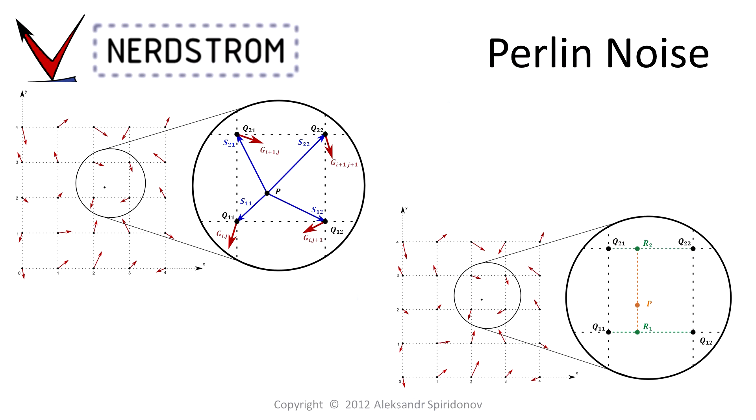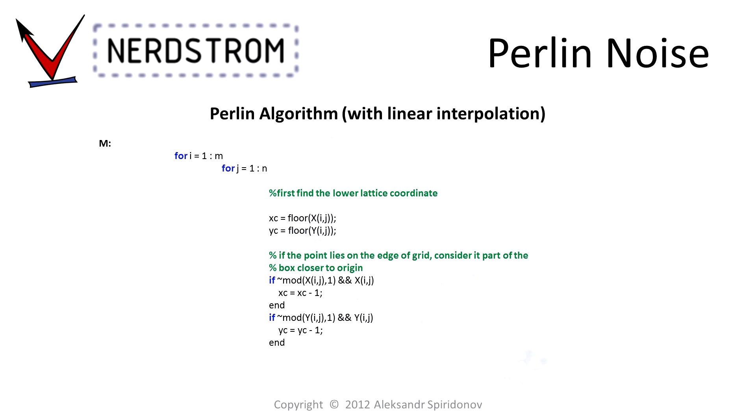We are now ready to move to the main loop of the algorithm, where we calculate the actual values of the noise surface. The main part of the algorithm is a nested for loop, which loops over every index of the sample point array. First, for every point, the algorithm calculates the lower corner coordinate of the lattice cell in which the point resides by truncating the coordinates of the sample point with a call to the floor function. There is also some error checking, which prevents indices from going out of bounds of the arrays along the upper edges of the lattice.